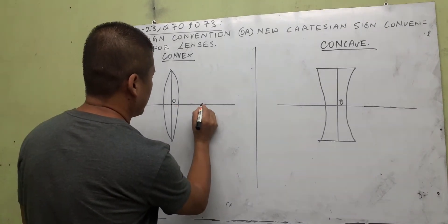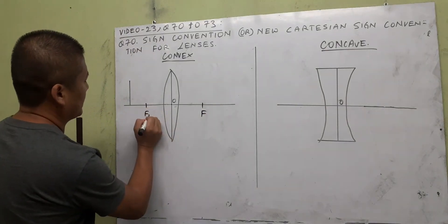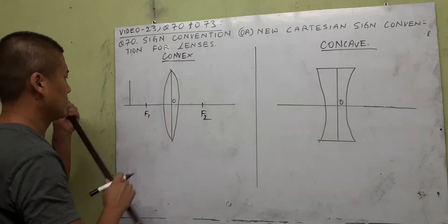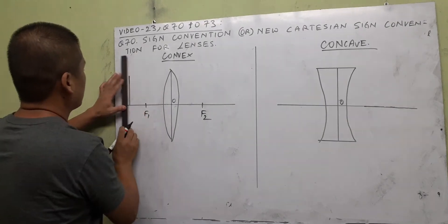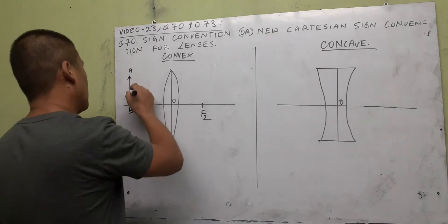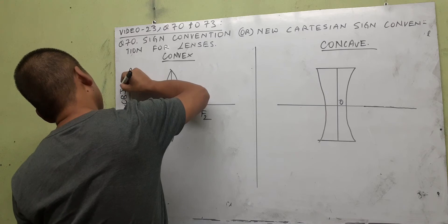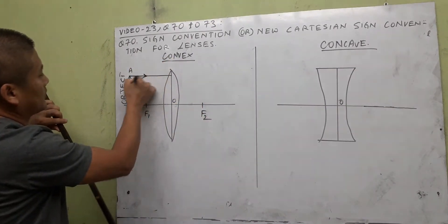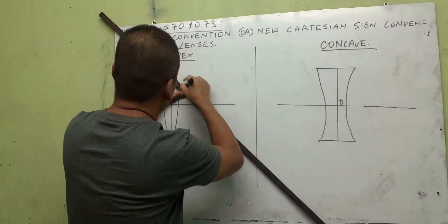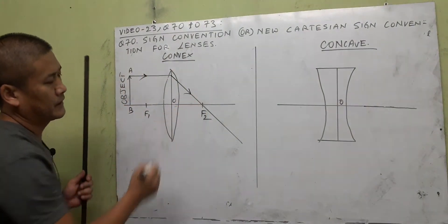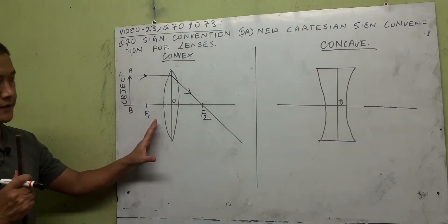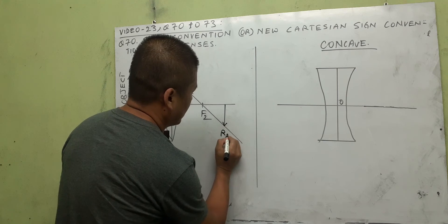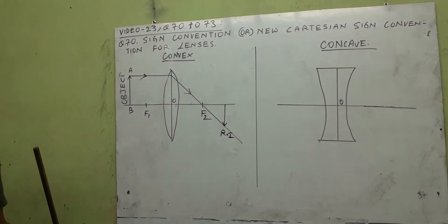The rule is the object should always be placed on the left. Draw your focus points — f1 and f2 — about three centimeters on each side. Place your object A-B on the left. Draw a ray parallel to the principal axis; it will go to the focus after refraction. In a convex lens, all real and inverted images are formed on the right side.